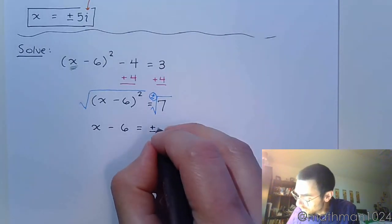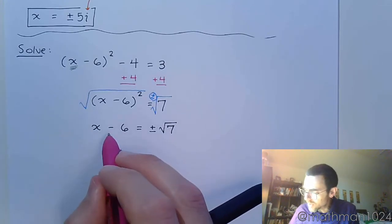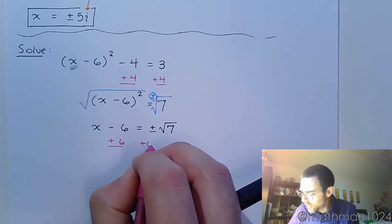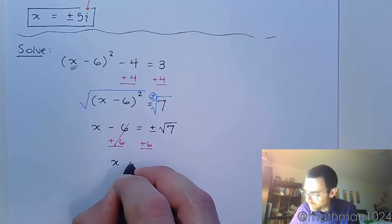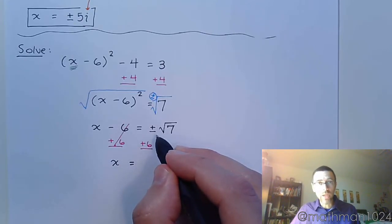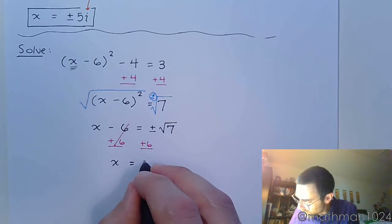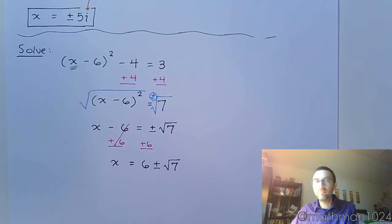So now we have x − 6 = ± the square root of 7. Since 7 is prime, there's nothing you can do except leave it as the square root of 7. We're almost done — we need to get x by itself, so add 6 to both sides. When you already have a plus or minus working on the other side, anything you move over needs to go in front of the plus or minus.